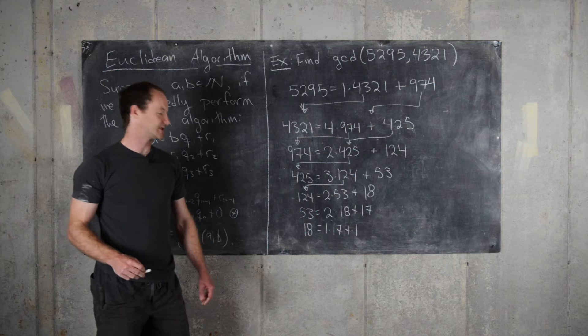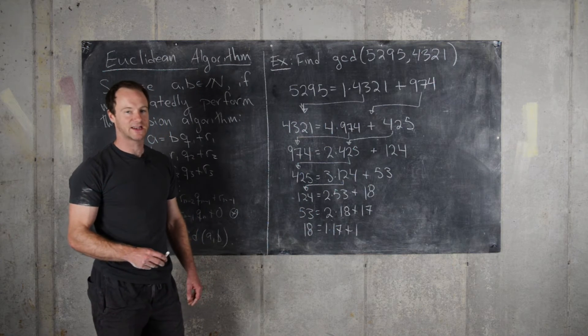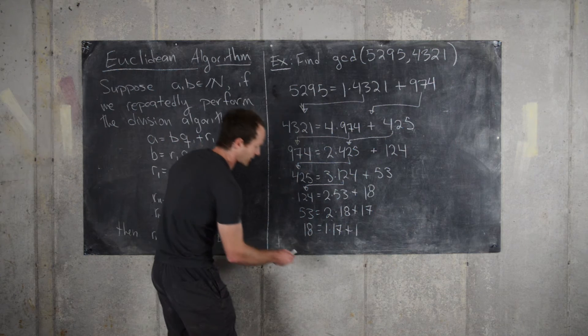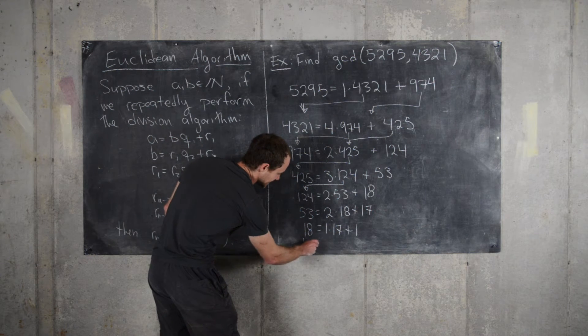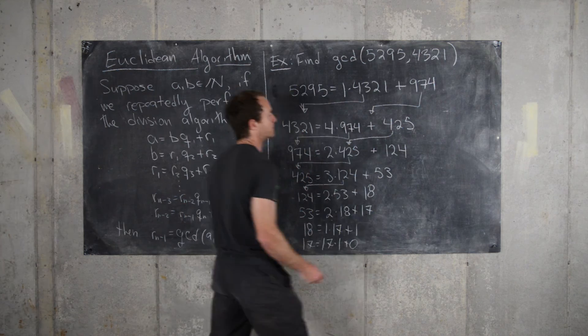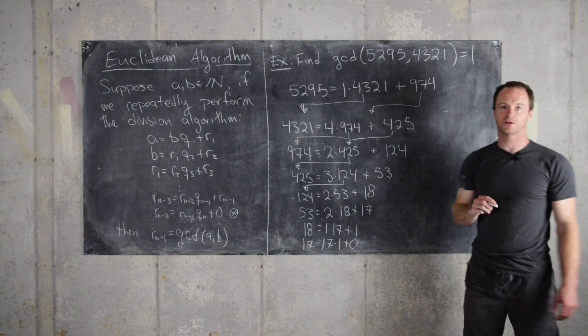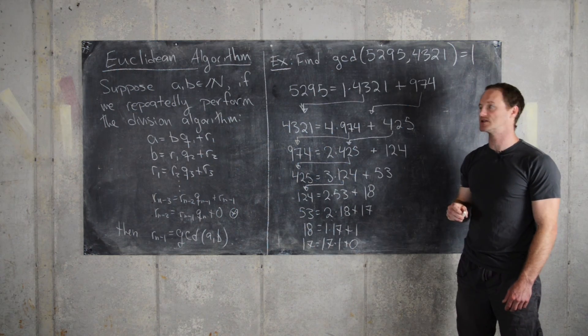So now it should be pretty obvious that the GCD of these two numbers is 1. But we could write one last step to make sure we get a 0 for the remainder. So that means 17 equals 17 times 1 plus 0. So that tells us that the GCD of these two numbers is 1. In other words, they're relatively prime.